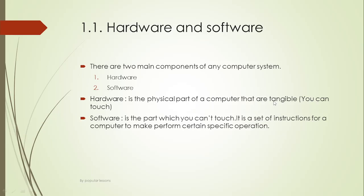There are two main components of any computer system: hardware and software. Hardware is the physical part of a computer that is tangible, which means you can touch it. Software is the part which you can't touch — it is intangible, or totally opposite of hardware. It is a set of instructions for a computer to perform certain specific operations.